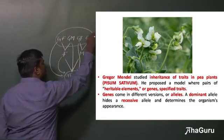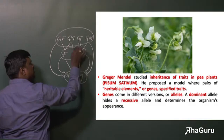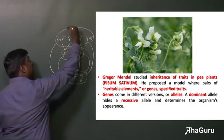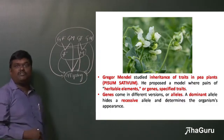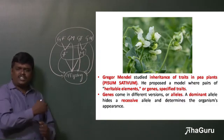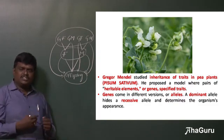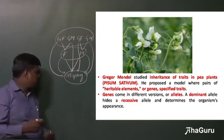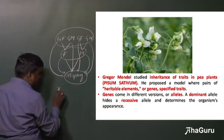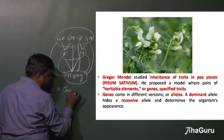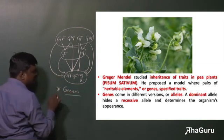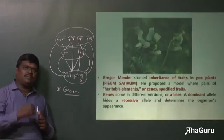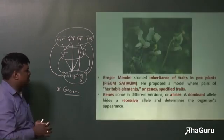This is one generation, and this is another generation. Even the child can get characteristics from great-grandparents, which is the fourth generation. So across all these generations, characters are transferred from one generation to the next by factors called genes.